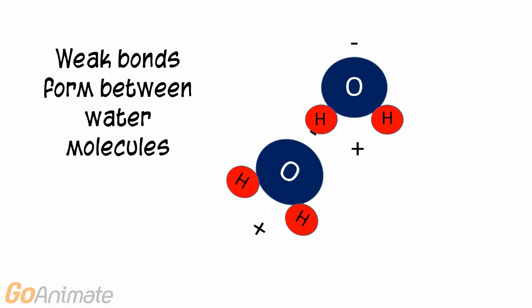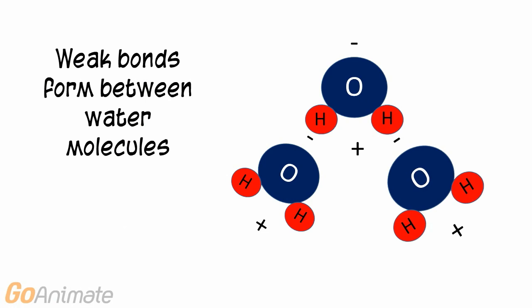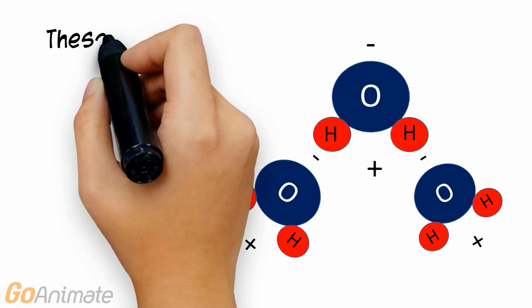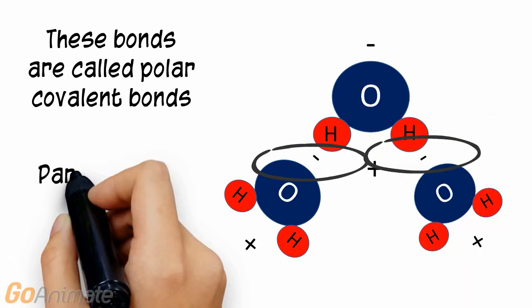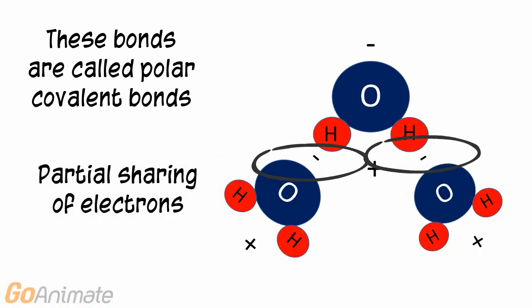Because of these charges, weak bonds can form between water molecules. These weak bonds are called polar covalent bonds and are characterized by a partial sharing of electrons.